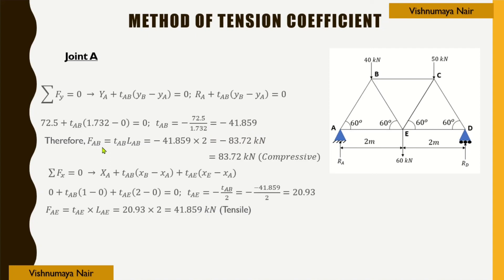Therefore FAB = TAB·LAB = −41.859 × 2 = −83.72 kN. Since it is negative, the force in member AB is compressive.